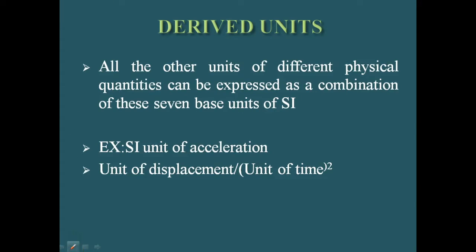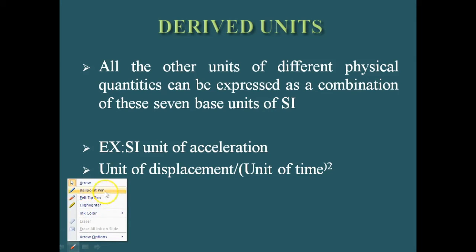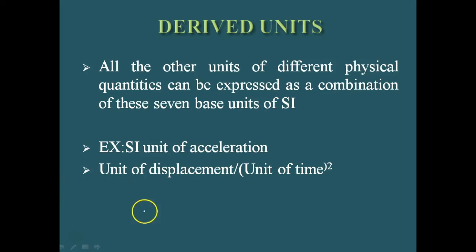Here we are dealing with derived units. As we all know, there are 7 fundamental units. But the number of physical quantities in the universe is very large, so if we give a different unit for all the physical quantities, it will be complex. What we'll do is derive the units for various physical quantities apart from the fundamental quantities. For all the other physical quantities, we derive units using the fundamental 7 units. So those are called derived units.